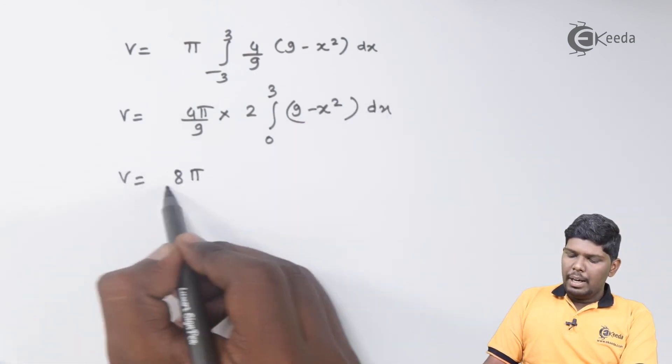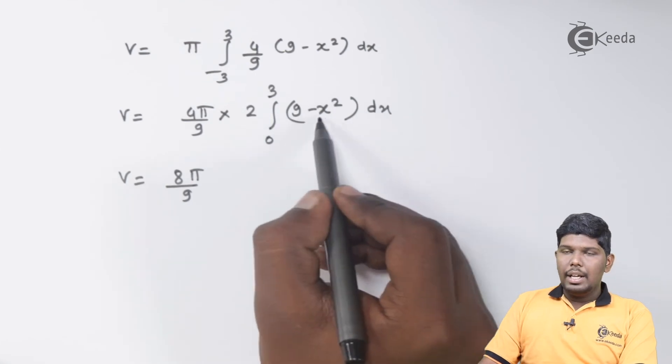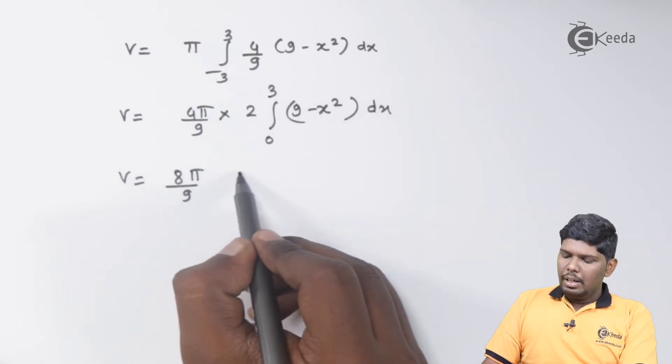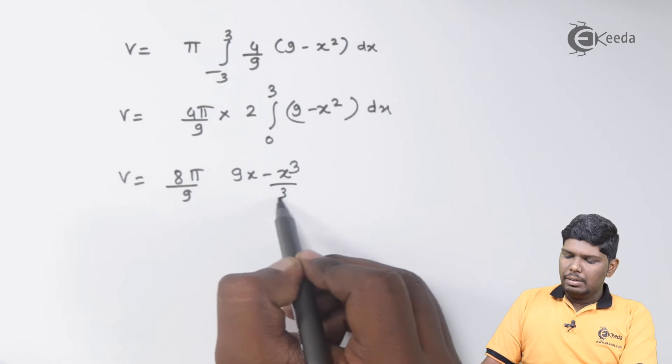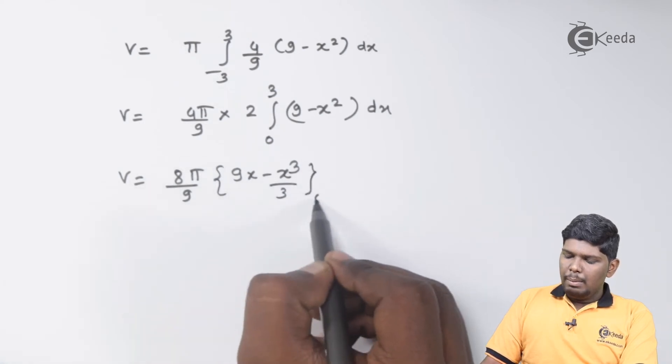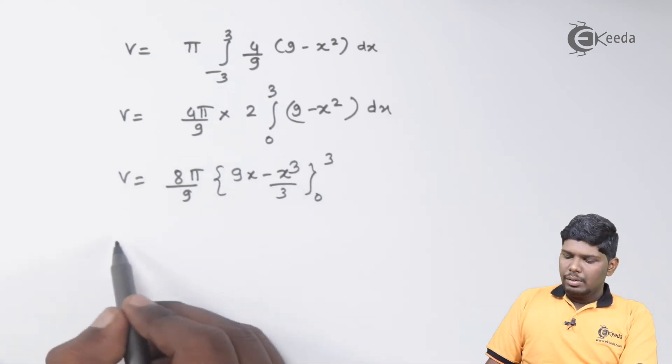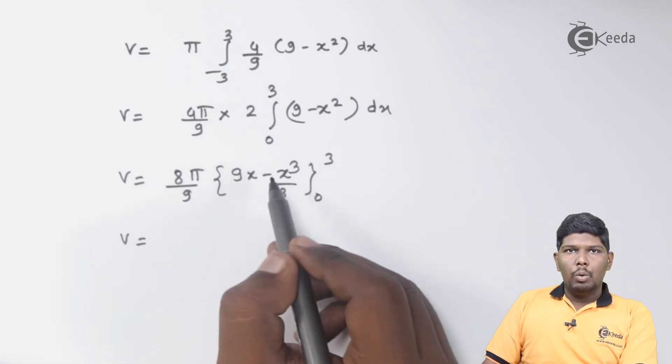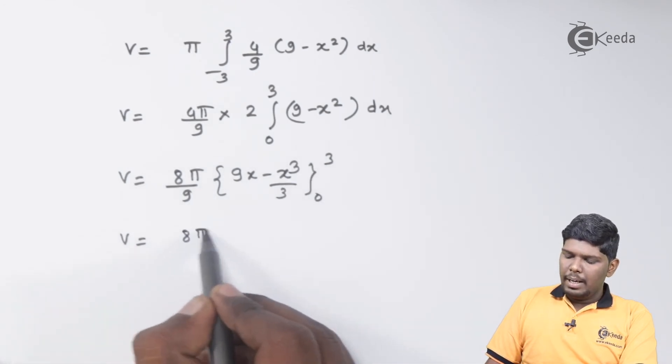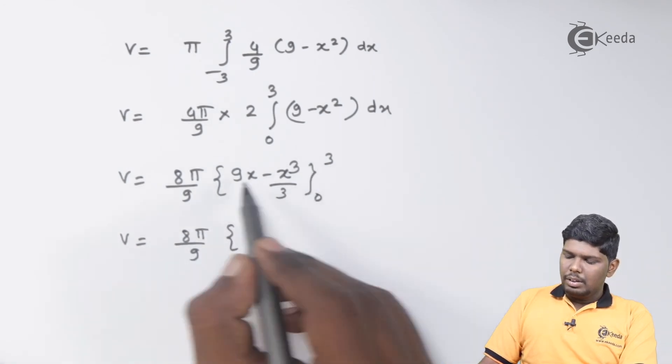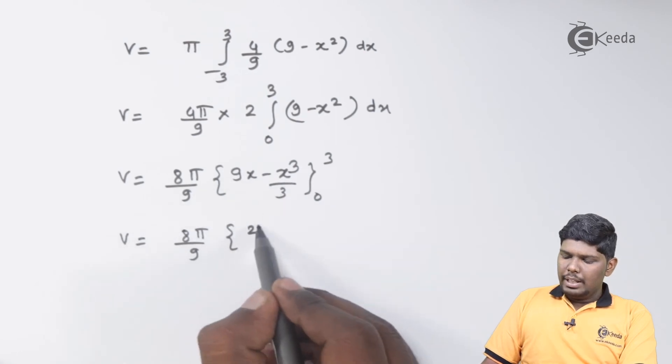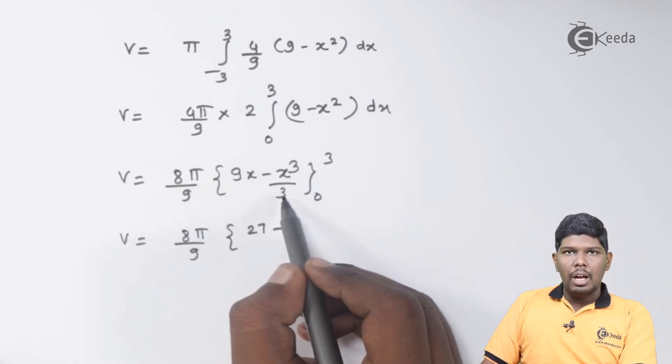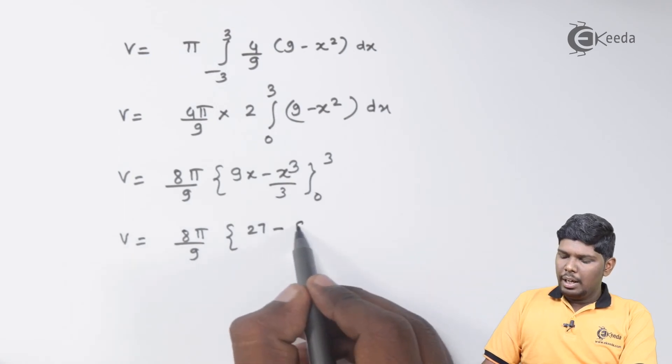This will give you 8π/9, integral of 9 - x² will be 9x - x³/3, within limits 0 to 3. On substituting upper and lower limits, we will get 8π/9. This will be 9 × 3, 27 minus 3³ is 27/3, that will give you 9 again. And after substituting lower limit, both will be 0.